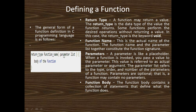Then I define the parameter list. A parameter is like a placeholder. When a function is invoked, you pass a value to the parameter. This value is referred to as the actual parameter or argument. The parameter list refers to the type, order, and number of the parameters of the function. Parameters are optional; a function may contain no parameters.